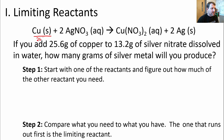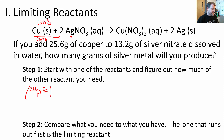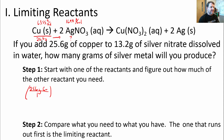We have 25.6 grams of copper. The question is how much silver nitrate do we need to use up that copper. It's just a stoichiometry problem. I'll record the molar masses: for copper, the molar mass from the periodic table is 63.55 grams per mole. For silver nitrate — one silver, one nitrogen, and three oxygens — you get 169.91 grams per mole. Note that I didn't include the coefficient of 2 out front; it's the mass of just one mole.